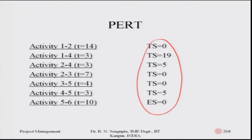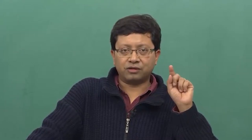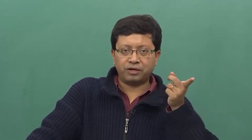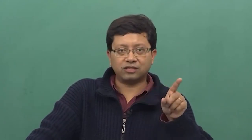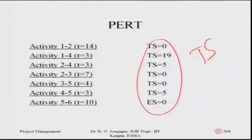Using those formulas: activity one-two has total slack zero, one-four has total slack zero, two-four has total slack five, two-three has total slack zero, three-five has total slack zero, four-five has total slack five, and activity five-six has total slack zero. I strongly urge students to work through these calculations themselves using the forward and backward pass values.